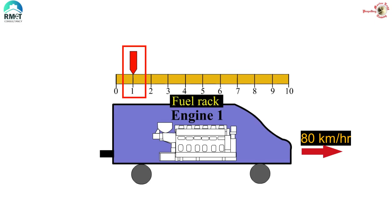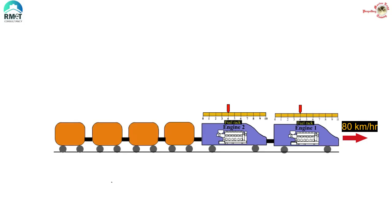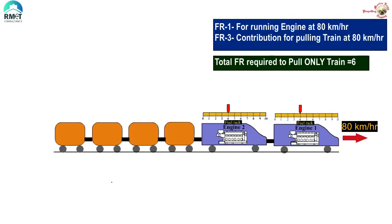Here you can see two similar diesel engines — engine one and engine two — together pulling the train at 80 kilometers per hour. Each engine is running with a fuel rack reading of four. Breaking that down: one rack is required to run the engine itself at 80 km/h, and three racks are required to contribute to pulling the train. So the total fuel required to pull only the train works out to six fuel racks.